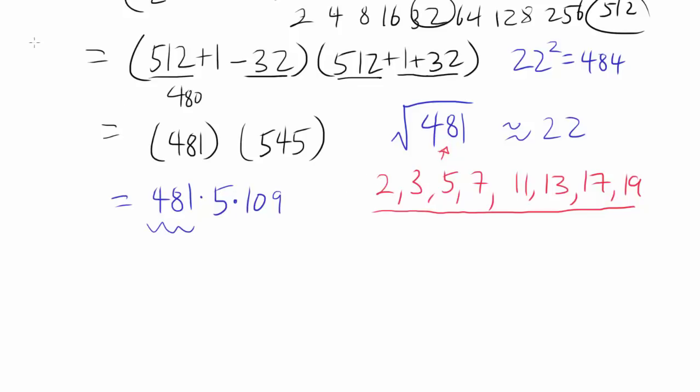Well, 481 is obviously not divisible by 2 because it's odd. 481, when you add up the digits, 4 plus 8 plus 1 is 13, which is not divisible by 3. And how about 5? It doesn't end in 0 or 5, so not 5.